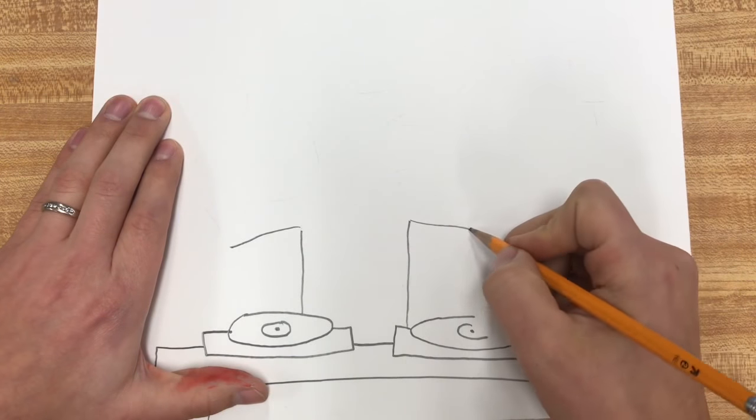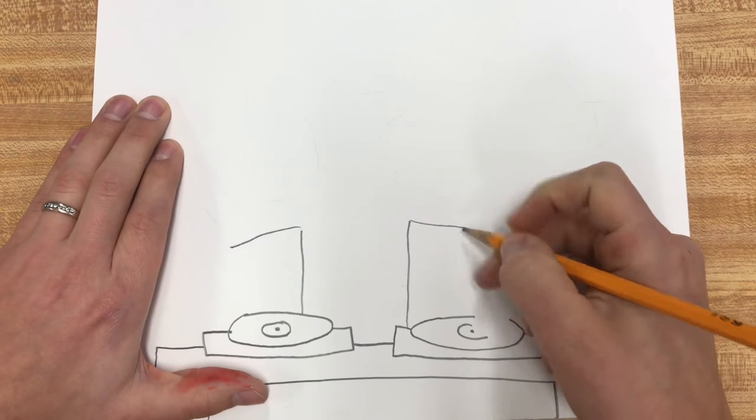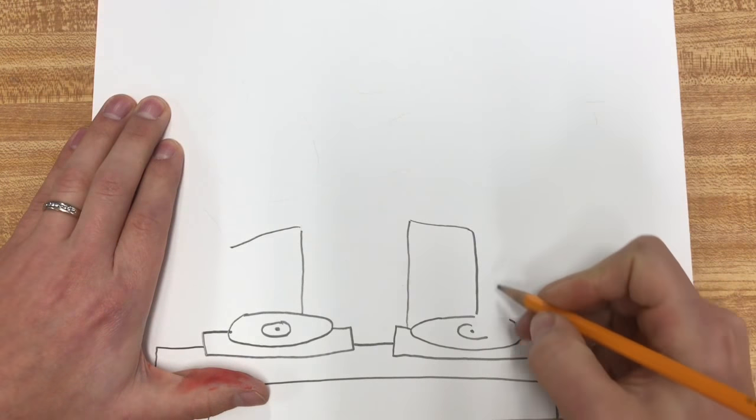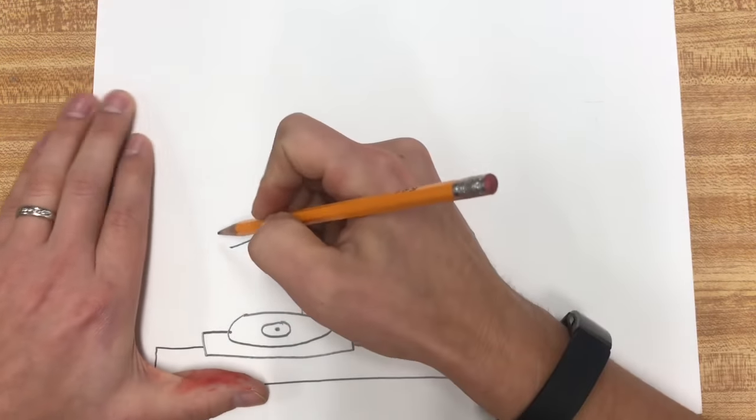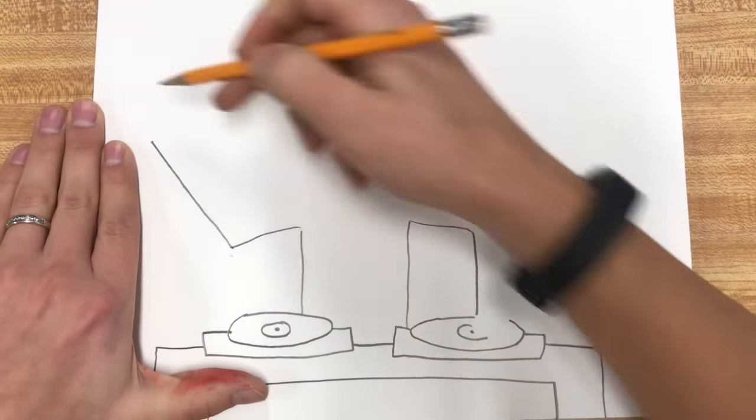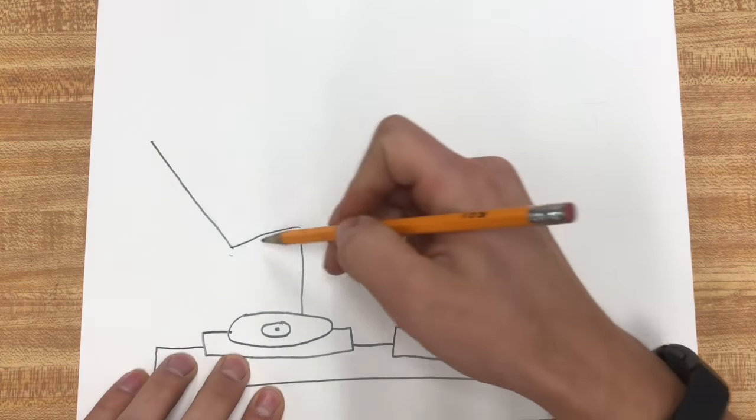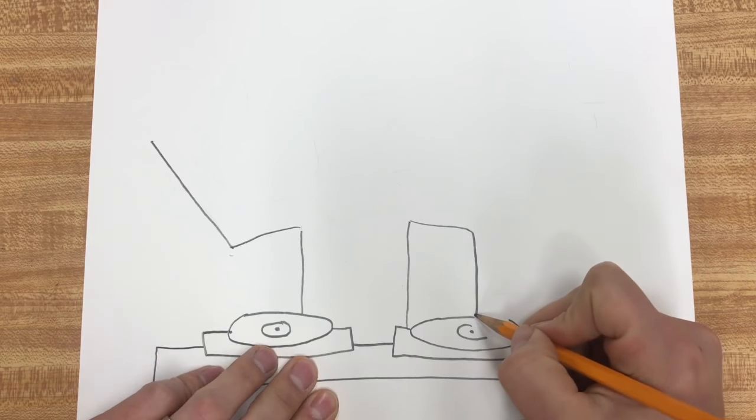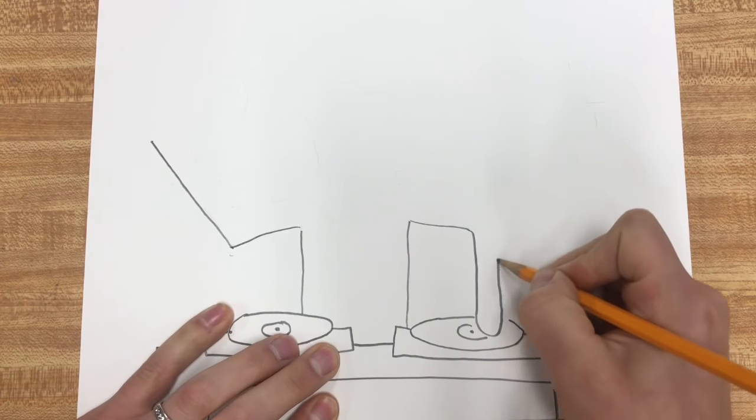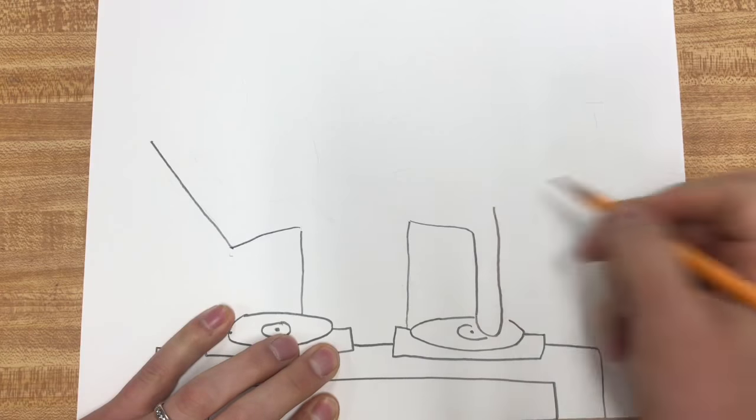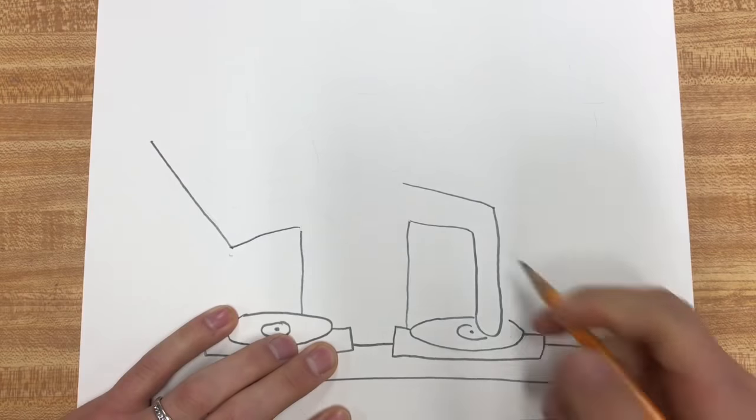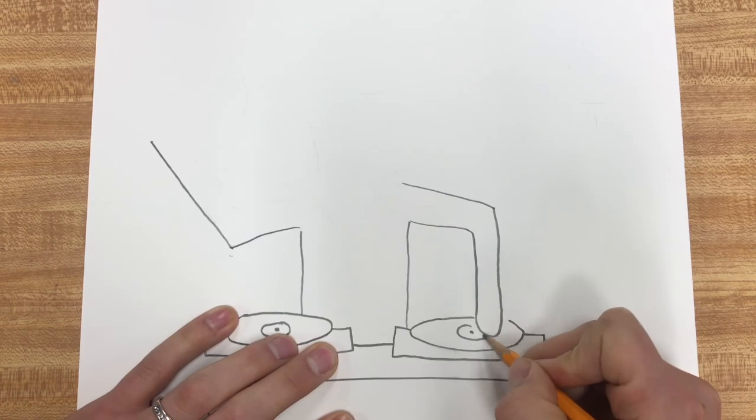This one will go down to his little turntable down here, and this one will go up a little bit longer. One going down and one going up. This one, loop around and come back up, and this one will come over. That's his arm going down here. Connect some of your lines if they didn't make exactly.